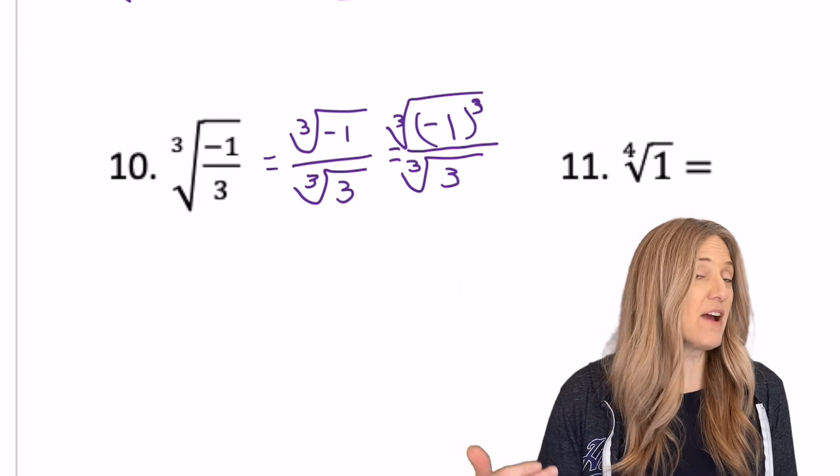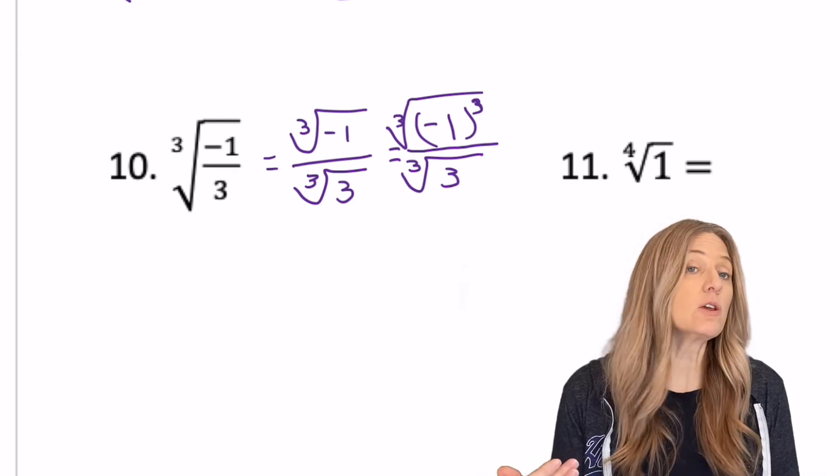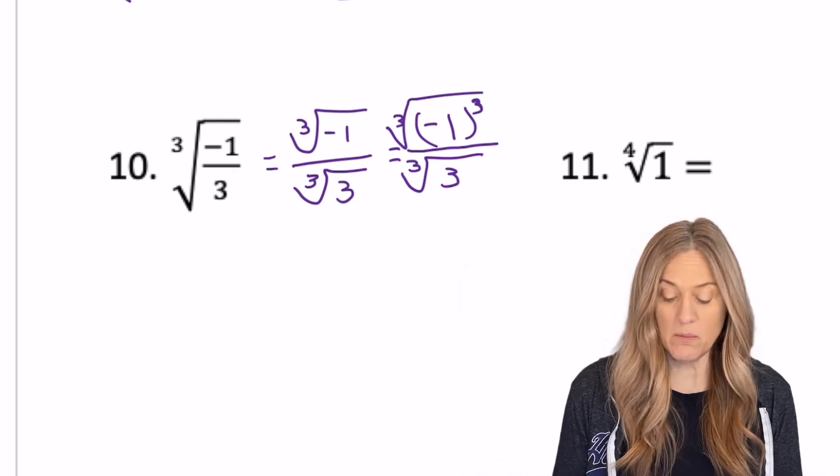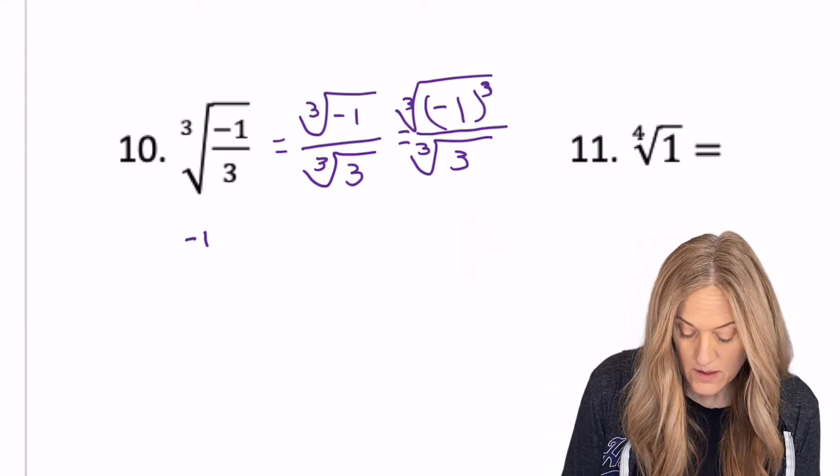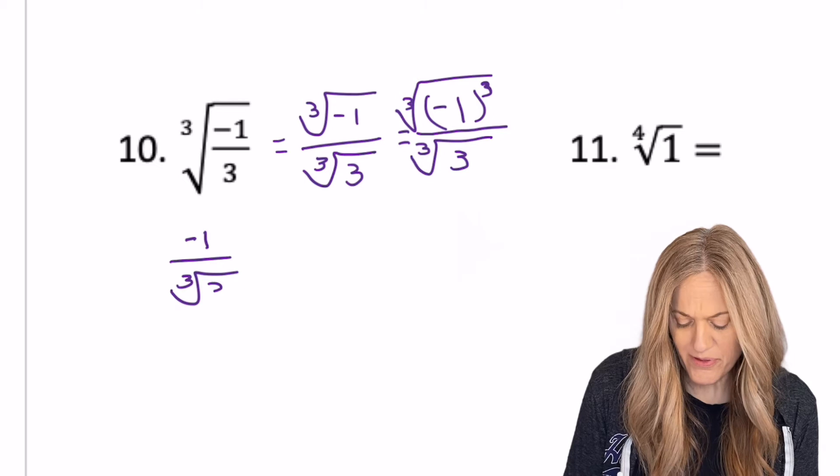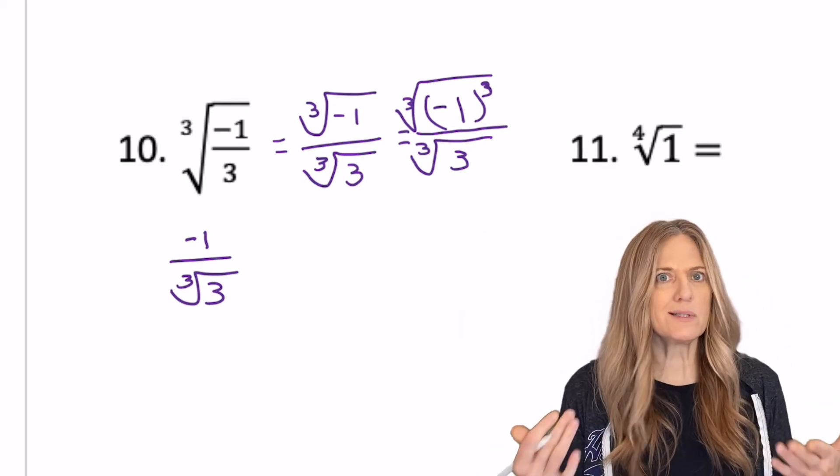Number 10, we have a fraction, and we already talked about that. So cube root of negative one over cube root of three. Cube root of negative one is negative one over cube root of three. Well, there's no number times itself three times.